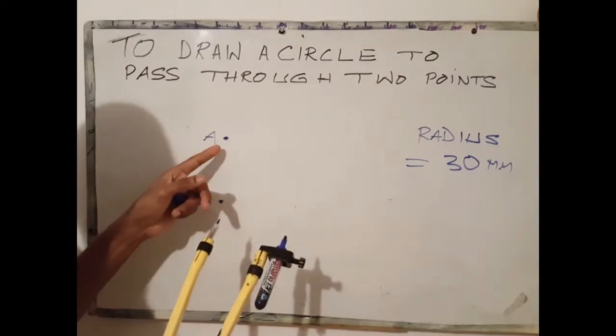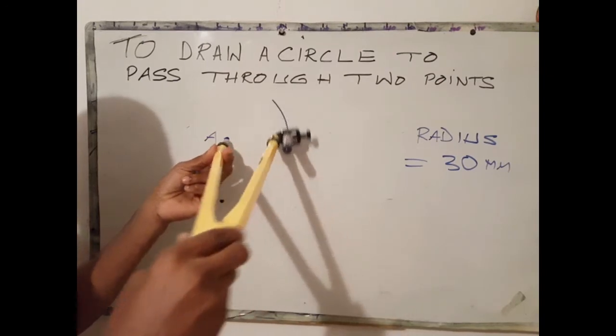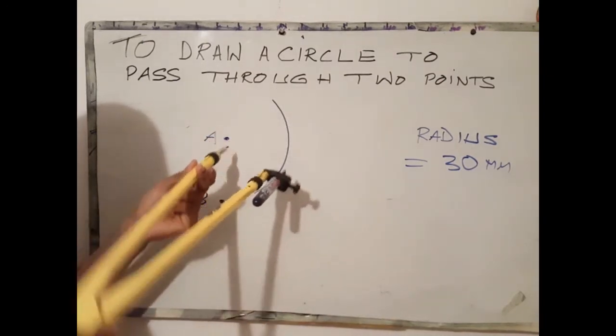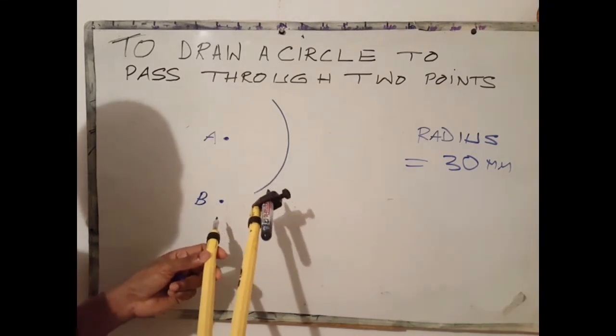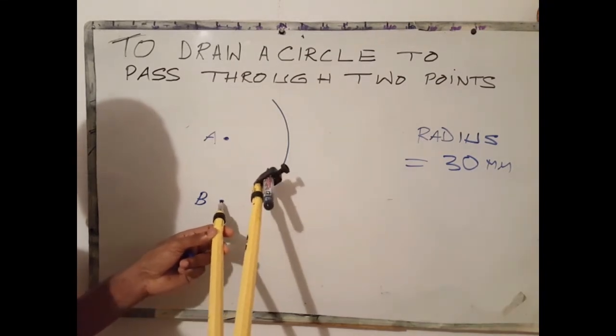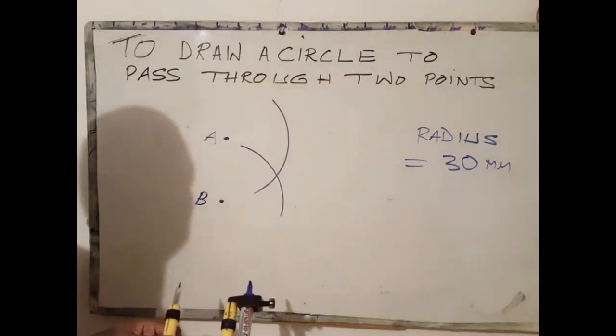With A as center, scribe our first arc. Using the same radius with B as center, scribe our second arc. At the point where both arcs meet, label that point O.